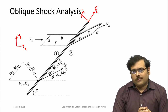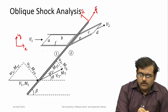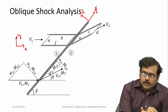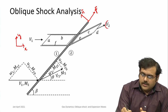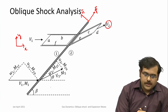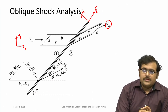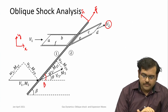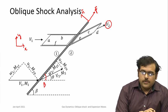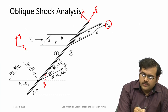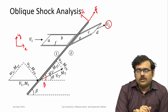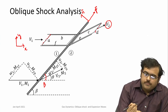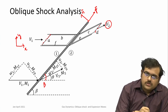As we did for normal shocks, here also we use a control volume. V₁ is the upstream incoming velocity and V₂ is the velocity after the shock; the flow has been deflected by angle theta. The oblique shock forms at angle beta — theta and beta are not the same; beta is always higher than theta. The control volume envelops the shock wave, with its faces parallel to the shock wave, so we are doing the analysis in the frame of the oblique shock.